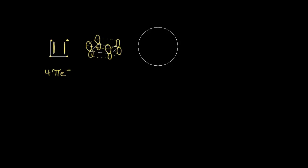When I look at the second criteria — 4n plus 2 pi electrons — I don't have that. I have a total of 4 pi electrons, and that's really 4n where n is equal to 1, since 4 times 1 equals 4. So I have 4n pi electrons, not 4n plus 2. I already know that this compound is not aromatic just by looking at that.